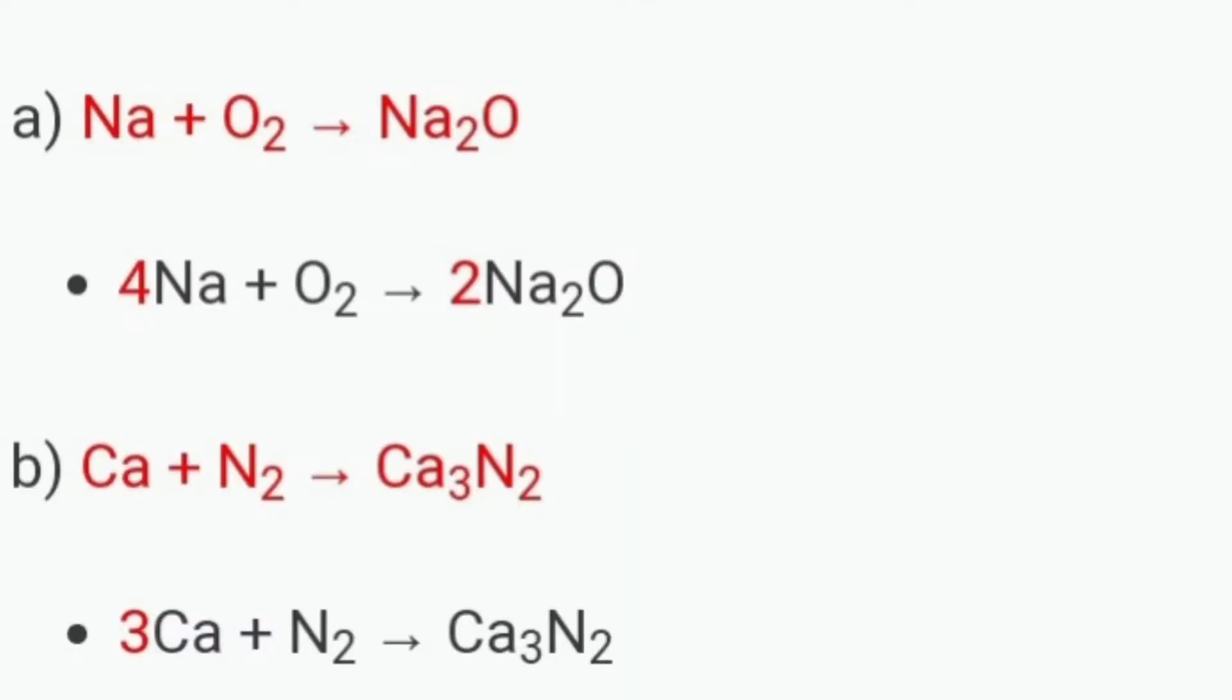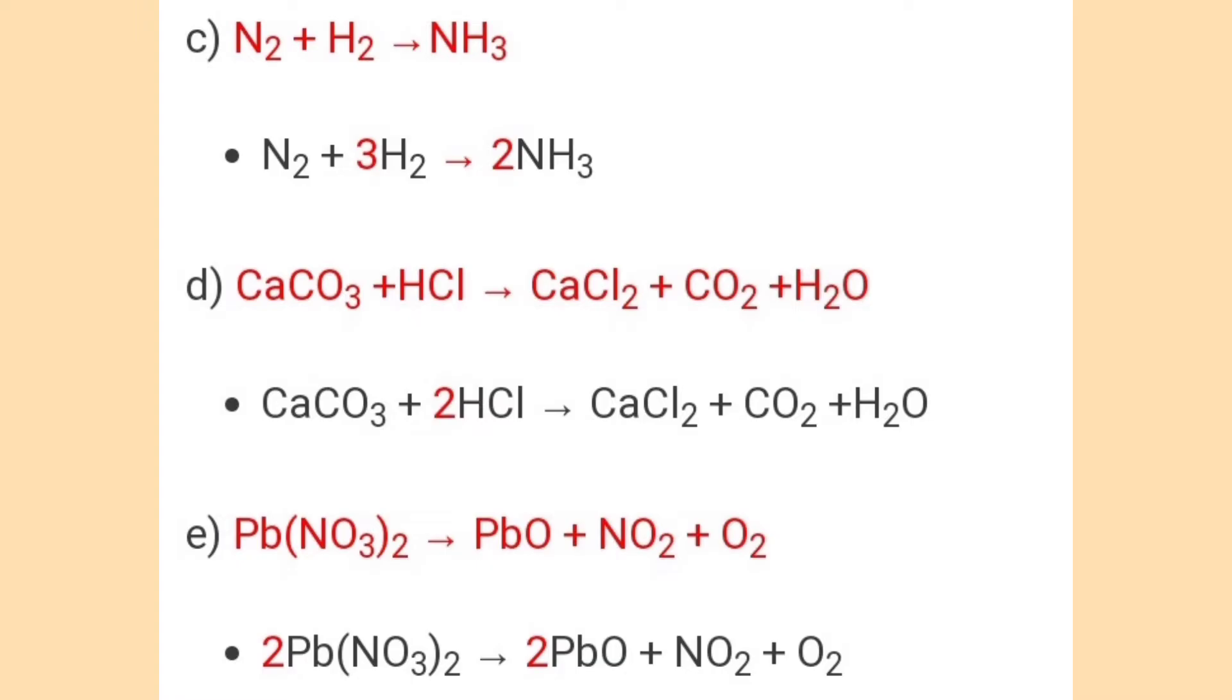Option A: Na + O2 → Na2O. Answer: 4Na + O2 → 2Na2O. Option B: Ca + N2 → Ca3N2. Answer: 3Ca + N2 → Ca3N2. Option C: N2 + H2 → NH3. Answer: N2 + 3H2 → 2NH3. Option D: CaCO3 + HCl → CaCl2 + CO2 + H2O. Answer: CaCO3 + 2HCl → CaCl2 + CO2 + H2O. Option E: Pb(NO3)2 → PbO + NO2 + O2. Answer: 2Pb(NO3)2 → 2PbO + NO2 + O2.